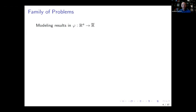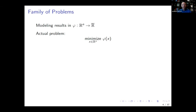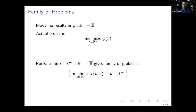We have some optimization problem that might come from machine learning, resource allocation, or reliability engineering. Let's think of it as minimizing some phi. A Rockefellian function f provides a family of problems — a parametrization of the optimization problem with parameter vector u. Among those many problems, when u equals zero, we are back to the actual problem by definition. A Rockefellian function defines a family of perturbations of the problem of interest.